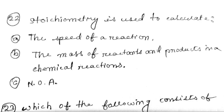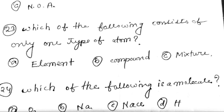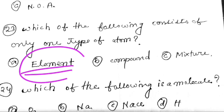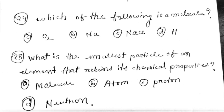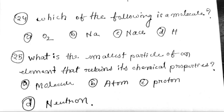Stoichiometry is used to calculate. Next: Which of the following consists of only one type of atom? Next: What is the smallest particle of an element?